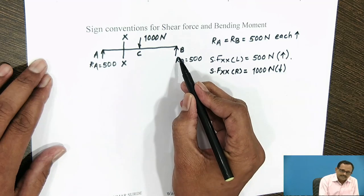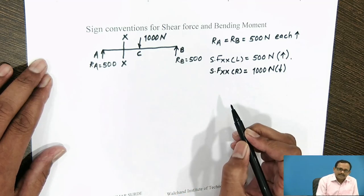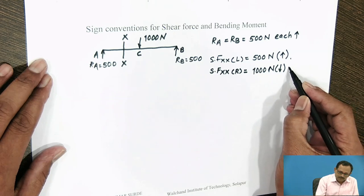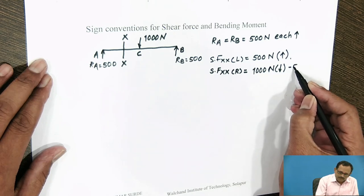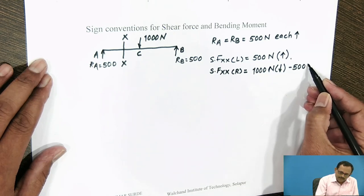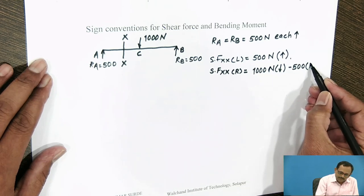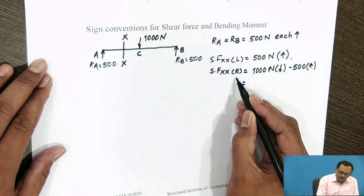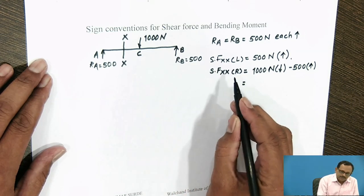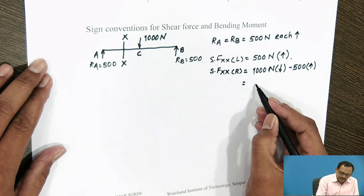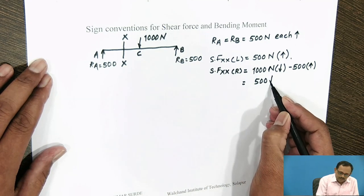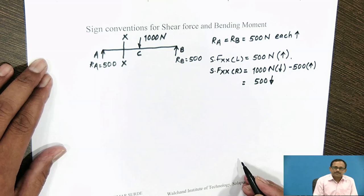If you consider the right side of the section, the reaction at B acting vertically upward is considered to be negative. Therefore, the total Shear Force acting to the right side of the section is 500 N in the downward direction.